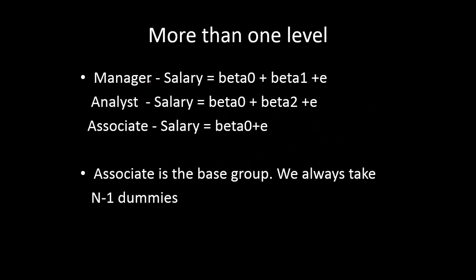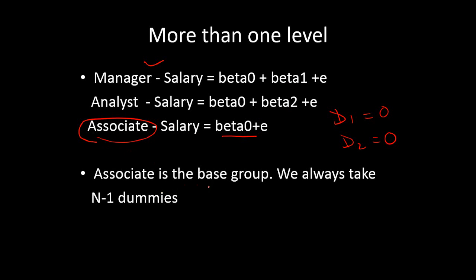When we have D₁ and D₂: if the employee is a manager, D₁ takes one, so salary = β₀ + β₁. If the employee is an analyst, D₂ takes one, so salary = β₀ + β₂. If the employee is an associate, both D₁ and D₂ are zero, so both β₁ and β₂ are multiplied by zero, leaving only the intercept β₀. Associate is therefore considered the base group or baseline, and salaries of analyst and manager are compared to this designation.